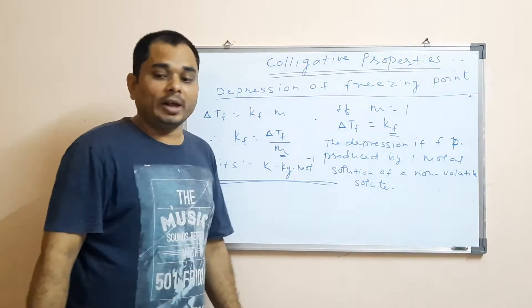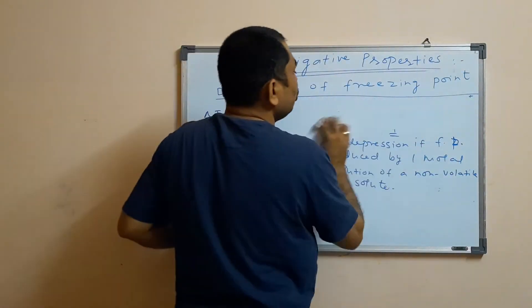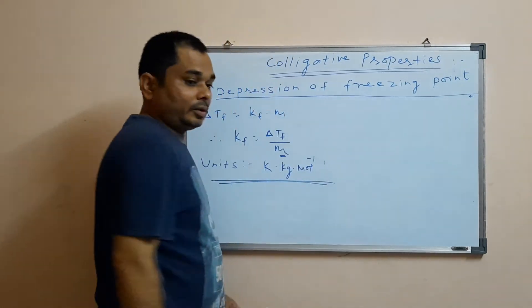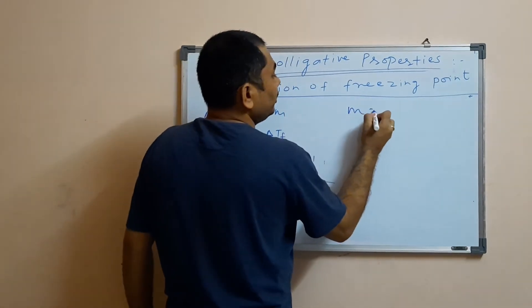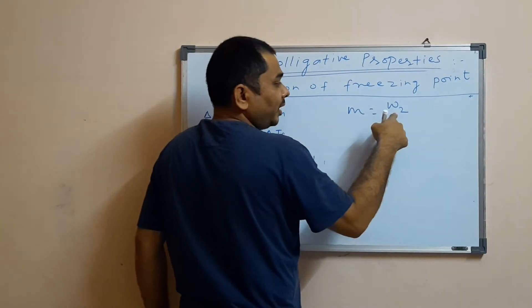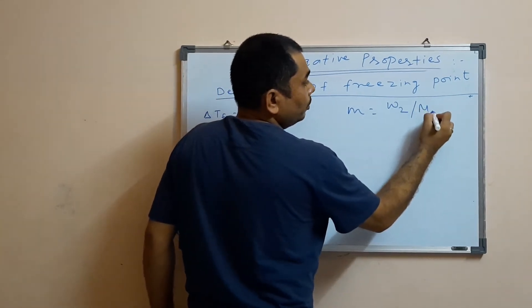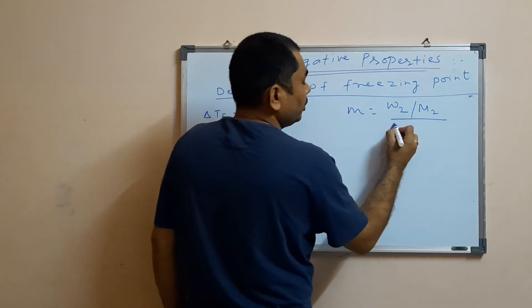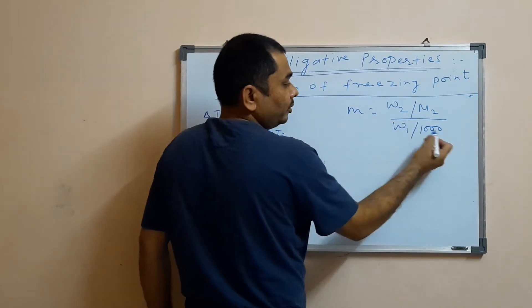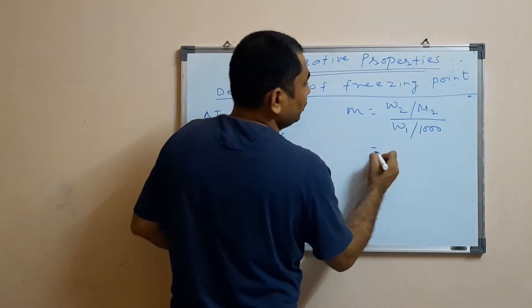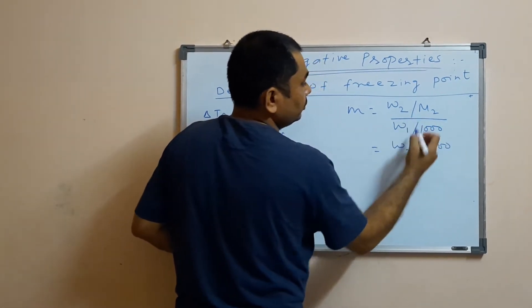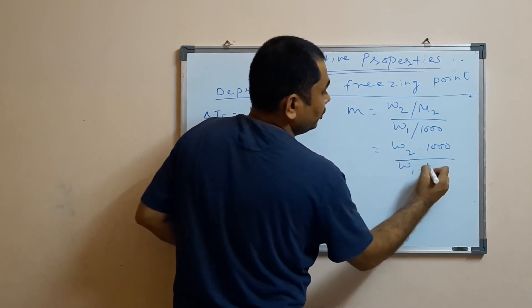Molality is the number of moles of solute present in 1 kg of solvent. Molality equals the number of moles of solute, which is calculated as mass of solute (W2) upon molar mass of solute (M2), divided by mass of solvent in kg — so we divide by 1000 since W1 is in grams. Therefore, molality equals W2 × 1000 upon W1 × M2.